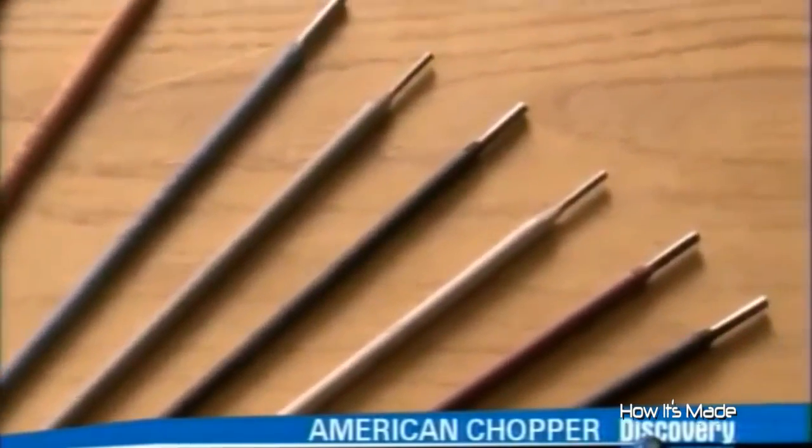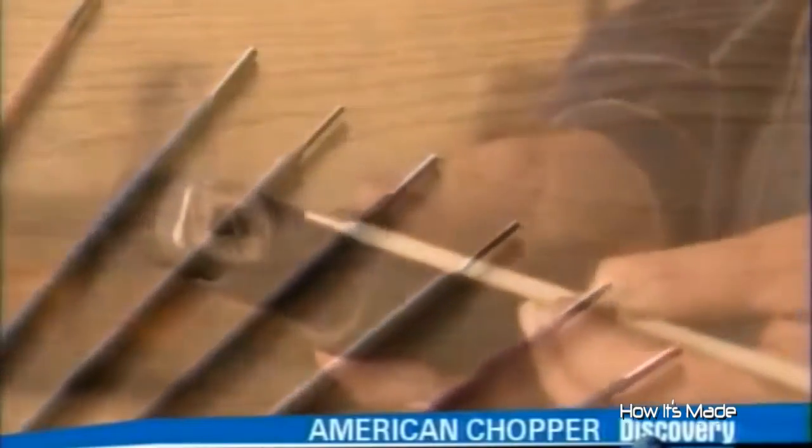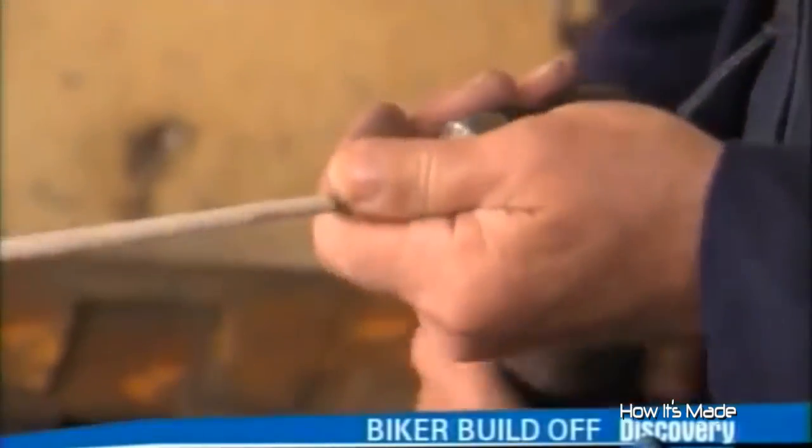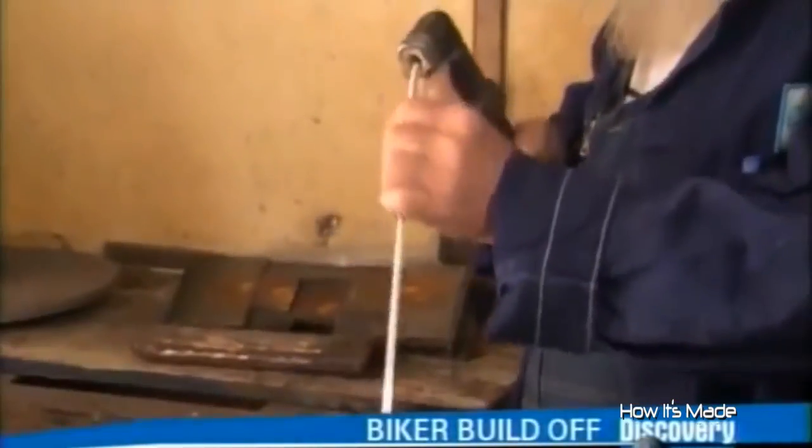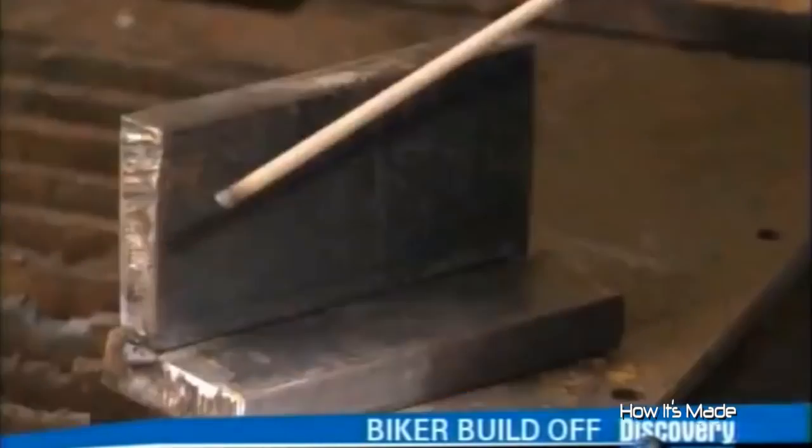This company's electrodes are coated with powdered metals and minerals. During welding, the metals melt and the minerals protect the area from oxygen, which would weaken the bond. The electrode transmits an electric current that heats and melts both the electrode and the metal surfaces, welding them together.